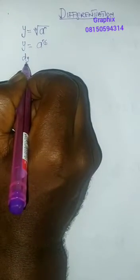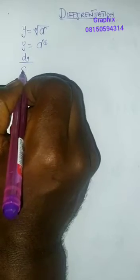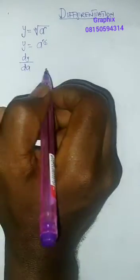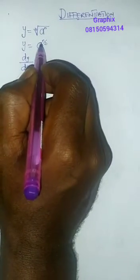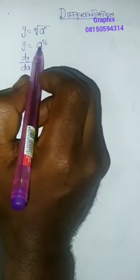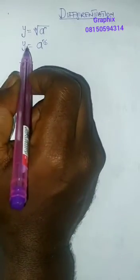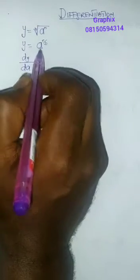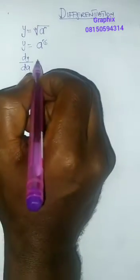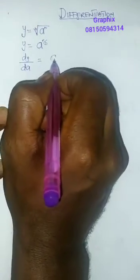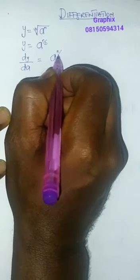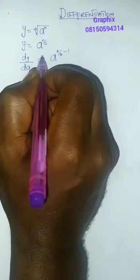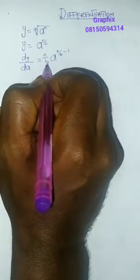A is a function of what? Y is the function of a, okay? So this will give me, I'll write this out: a to the n over b minus one, and I'll bring the n over b in front.